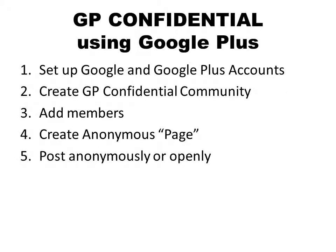The first step is to set up Google and Google Plus accounts. I'm not going to cover this in this presentation, but you'll find guides on YouTube and elsewhere if you need help. The second step is to create a GP Confidential community — that's what we call the private group. The third step is to add members to that community. Fourthly, create an anonymous page — that's the key feature of this system.